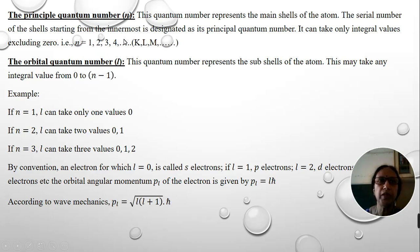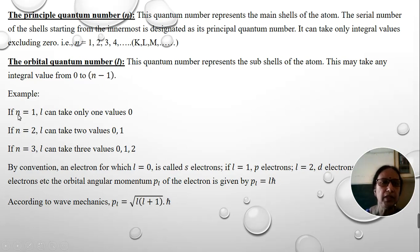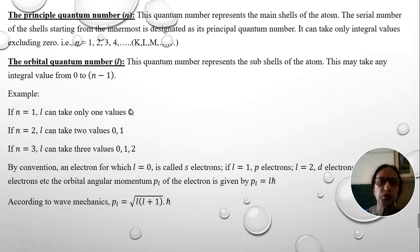The next is the orbital quantum number, denoted by the letter l. This quantum number represents the number of subshells present in each main shell. l can take values from 0 to n−1, where n is the principal quantum number. For example, if n=1, l can take only one value, that is 0, which corresponds to the s subshell.